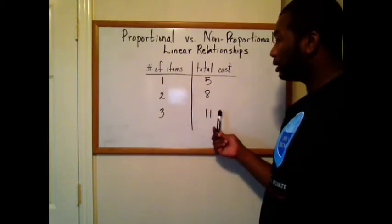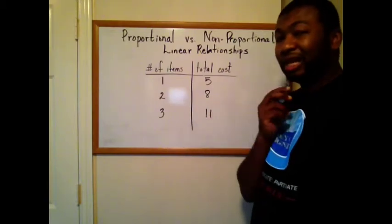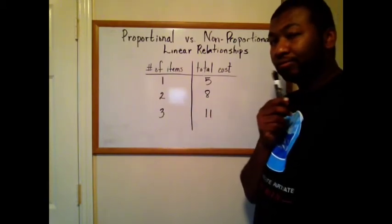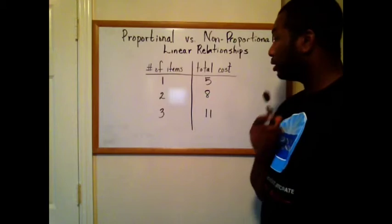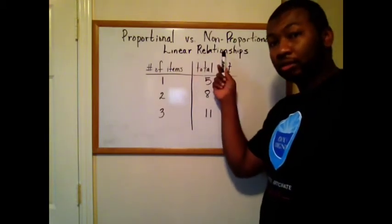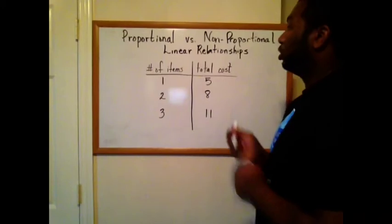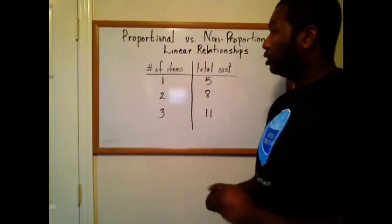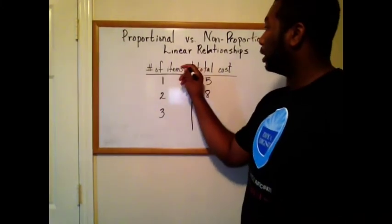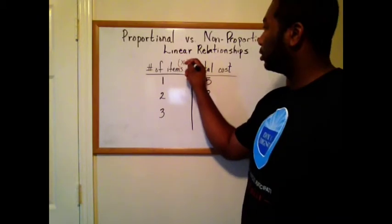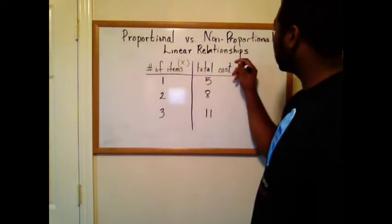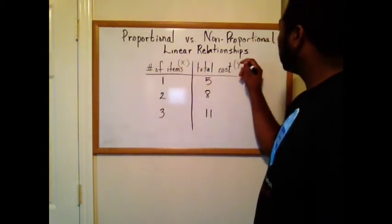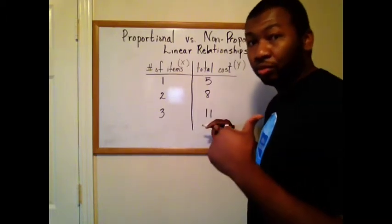So it keeps going up by the same amount. Does that mean it's proportional? Not necessarily. It does mean it's a linear relationship though. So to check to see if it's proportional, I'm going to treat this as an x value and I'll treat this as a y value.